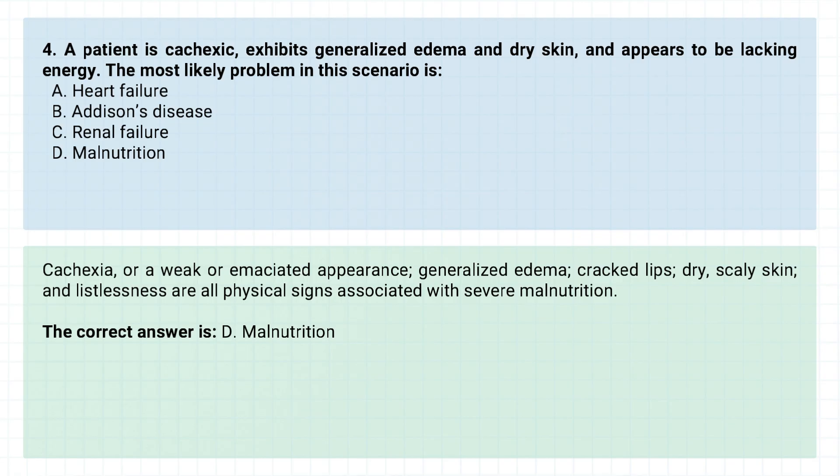Cachexia, or a weak or emaciated appearance, generalized edema, cracked lips, dry scaly skin, and listlessness are all physical signs associated with severe malnutrition.